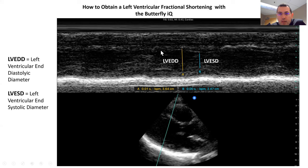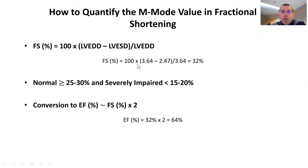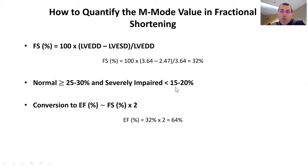We follow the tracing and find an area of relaxation to take our left ventricular end diastolic diameter, then find an area of contraction between the anterior and posterior walls to draw a line and get our left ventricular end systolic diameter. The values here are 3.64 and 2.47 centimeters respectively. Plugging into the equation: 100 × (3.64 − 2.47) / 3.64 = 32%. Converting: 32% × 2 gives an ejection fraction of 64%.